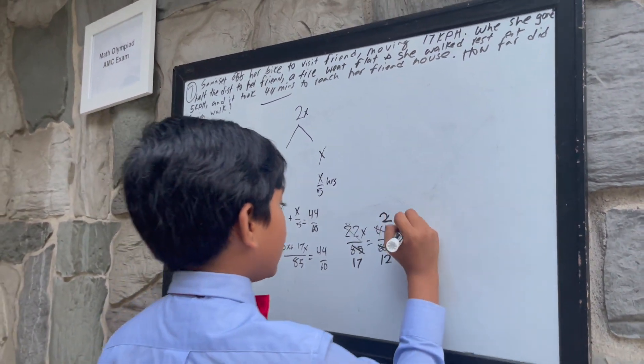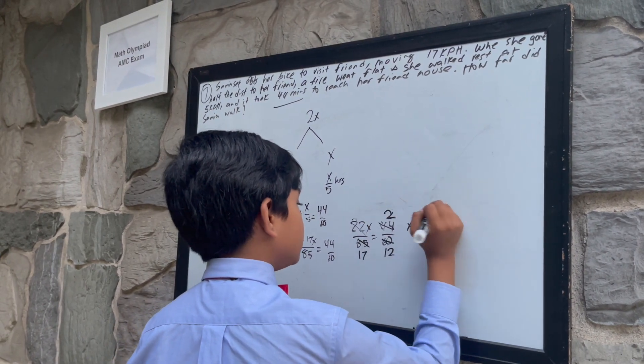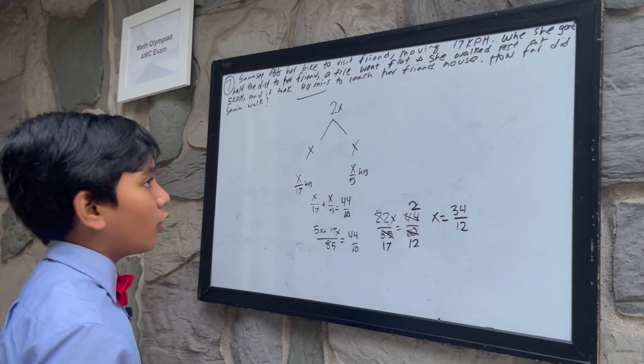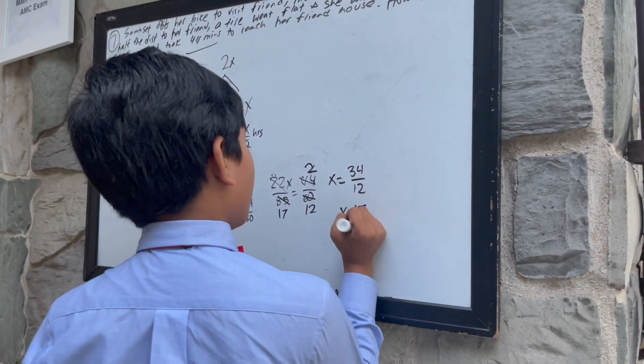So that means X is equal to 17 times 2, 34 over 12, simplified to 17 over 6.